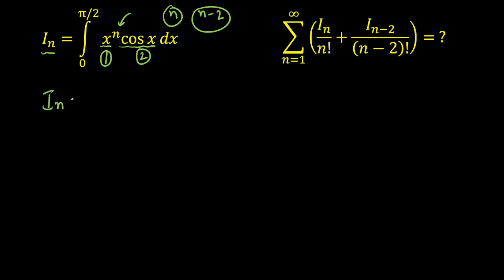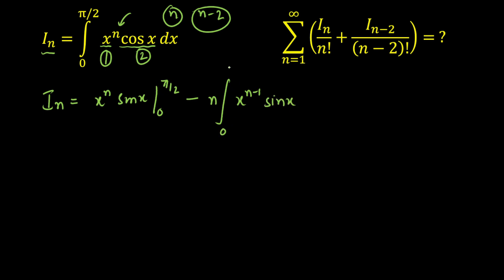Applying by-parts: I(n) equals [first function × integration of second] evaluated from 0 to π/2, minus the integral of [derivative of first × integral of second] from 0 to π/2. The derivative of the first function gives n·x^(n-1)·sin(x). Evaluating the boundary term: putting in the upper limit gives (π/2)^n · sin(π/2) = (π/2)^n · 1, and putting in 0 gives sin(0) = 0, so that term is (π/2)^n.